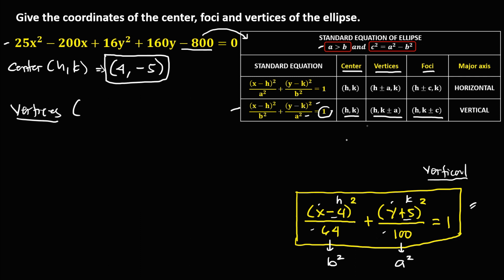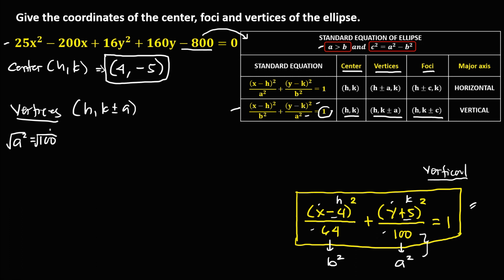For the vertices, the formula is (h, k plus or minus a). Since a² equals 100, taking the square root gives a equals 10. So we substitute h equals 4, k equals negative 5, and a equals 10.